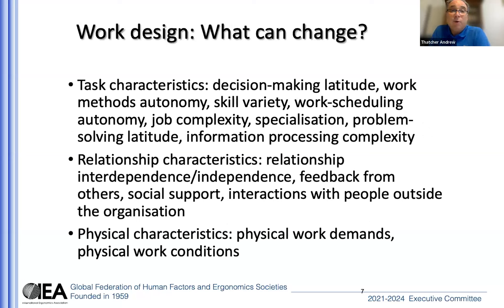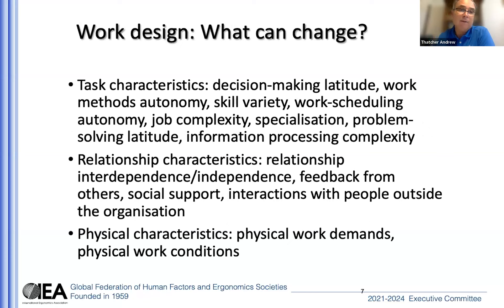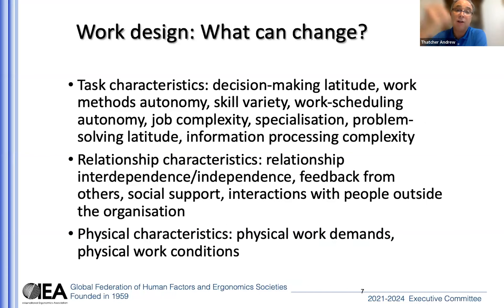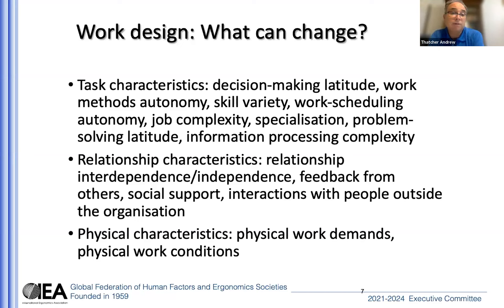At the task level, we can change things like decision-making latitude, work methods, autonomy, skill variety, work scheduling, job complexity, specializations, and problem solving. At the relationship level — both horizontal and vertical — we look at relationship dependence and independence, feedback from others, social support, and types of communications. We also look at the physical characteristics we can change: physical work demands and physical work conditions like lighting and ventilation.